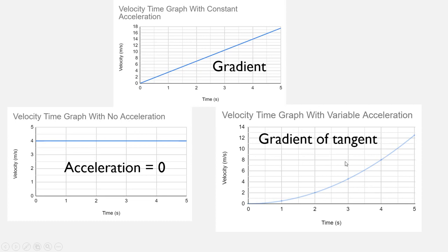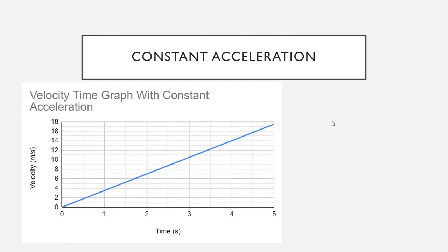We're going to take a closer look at these two situations and run through how you actually do those calculations. We'll start with the constant acceleration case because it's the easiest one. We need to remember the formula: acceleration equals delta v over delta t. Delta v is our change in velocity — the symbol delta is Greek and simply means 'change in' — and delta t means a change in time.